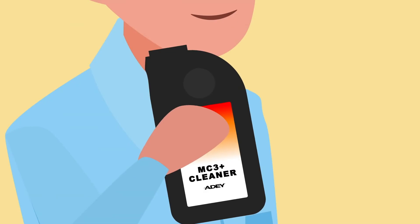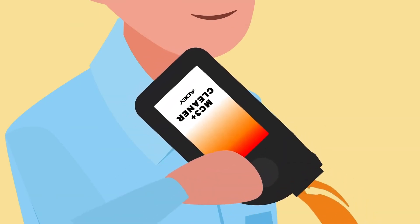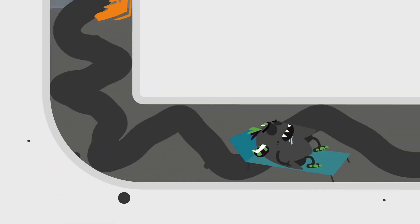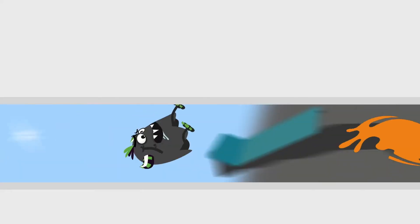Thankfully, AD is here to serve sludge an eviction notice and extend the life of your boiler. With AD MagnaClean System Flush, the sludge is lifted out of your heating system.